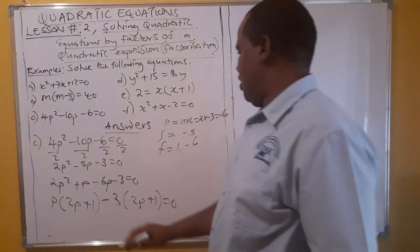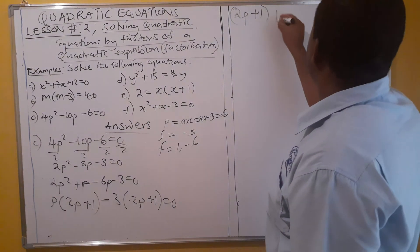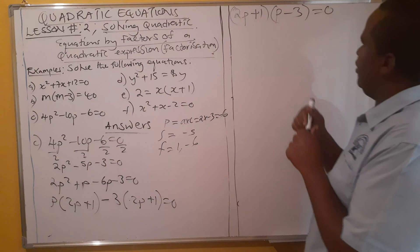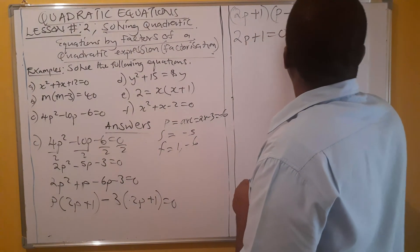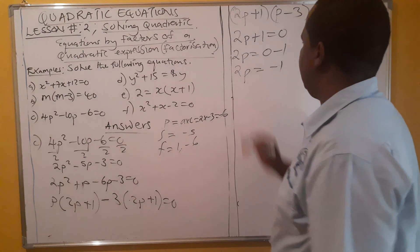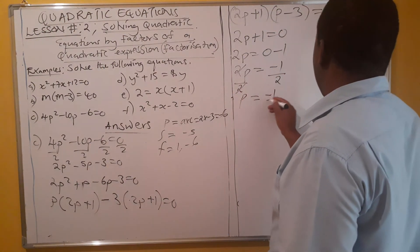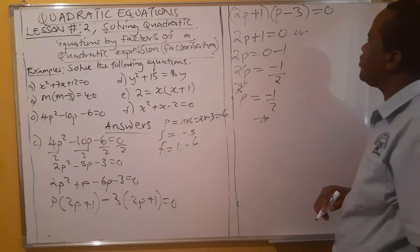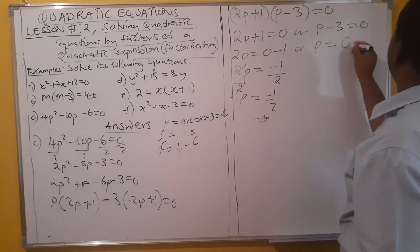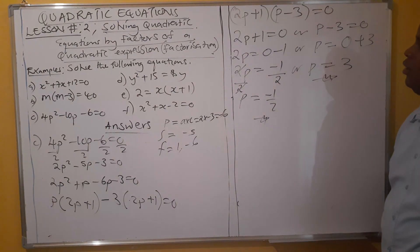Applying the zero product property: either 2p + 1 = 0, so 2p = −1, and dividing by 2 gives p = −1/2; or p − 3 = 0, giving p = 3. So we have found the solutions p = −1/2 or p = 3.